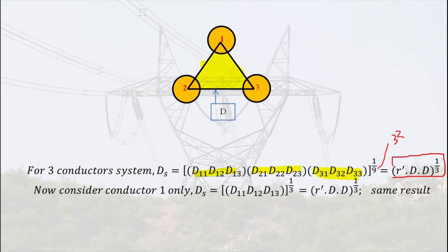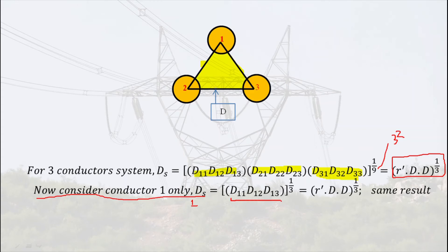Now taking the distance with respect to conductor one only, the self-GMD DS equals D11 times D12 times D13, to the power 1 by 3. Again we get r-dash times d times d, to the power 1 by 3. So again we are getting the same result.